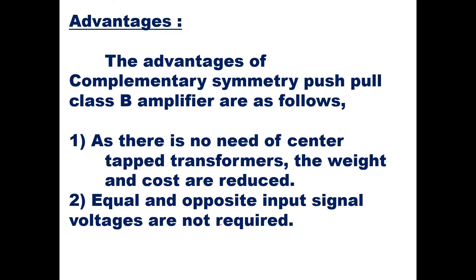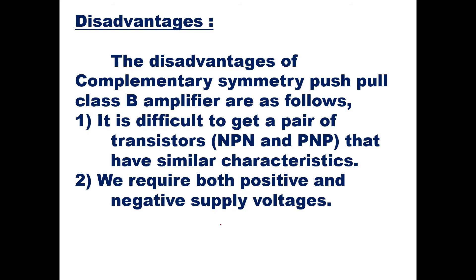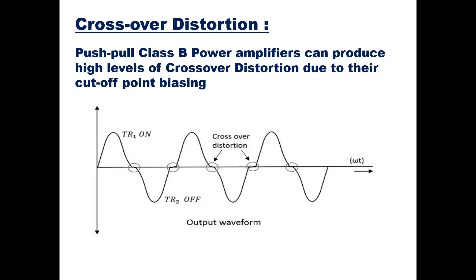The advantages of the Class B Complementary Symmetry Push-Pull Amplifier are: as there is no need for center-tap transformers, the weight and cost are reduced; and equal and opposite input signal voltages are not required. The disadvantages are: it is difficult to get a pair of NPN and PNP transistors with similar characteristics, which is a practical problem; and both positive and negative supply voltages are required.